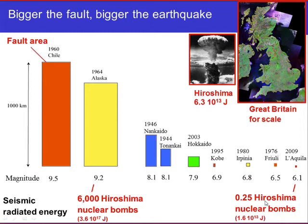Only a small fraction of the energy dissipated during an earthquake goes into radiated seismic waves. For the L'Aquila earthquake, the radiated energy was only a quarter of the Hiroshima nuclear bomb, but the total energy dissipated was probably 10,000 times bigger. So only about 1% or much less of the total earthquake energy goes into seismic waves — which is fortunate, otherwise there would be nothing left after an earthquake.